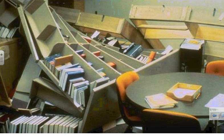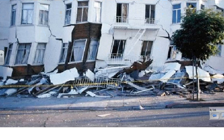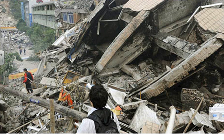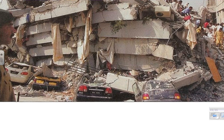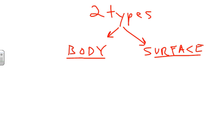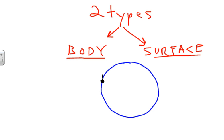The body waves are the ones that travel through the earth, not on the surface. You can see tremendous destruction caused by surface waves, but if we look at a cross-section diagram of the earth, when an earthquake happens, the surface waves travel along the surface while the body waves travel through the earth.